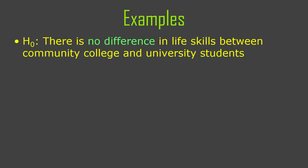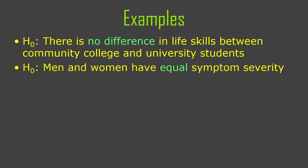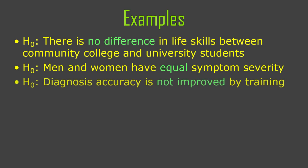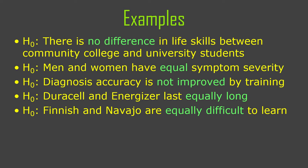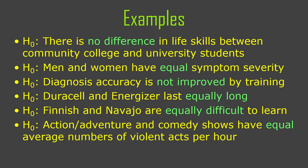Looking at null hypothesis situations for these examples: the null hypothesis might be that there is no difference in life skills between community college and university students; or that men and women have equal symptom severity; or that diagnostic accuracy isn't improved — the mean accuracy at time one doesn't change by time two; or that Duracell and Energizer last equally long; or that Finnish and Navajo were equally difficult to learn; or that action-adventure and comedy shows have equal average numbers of acts of violence per hour. These are all null hypotheses for two-sample hypothesis test situations.